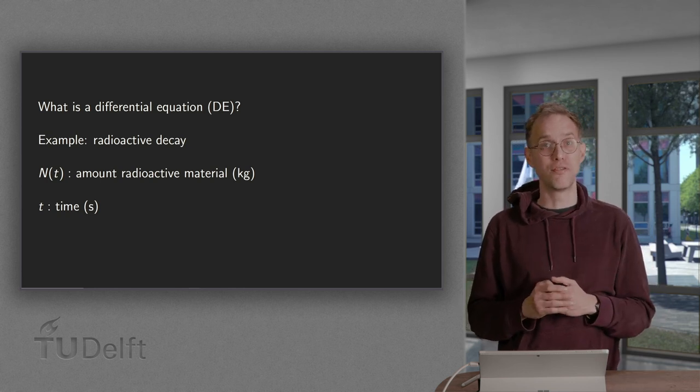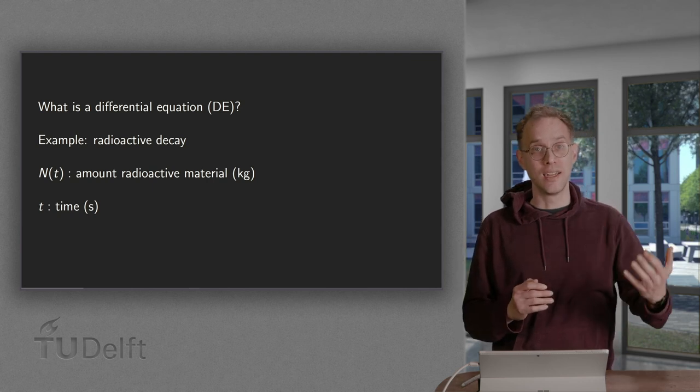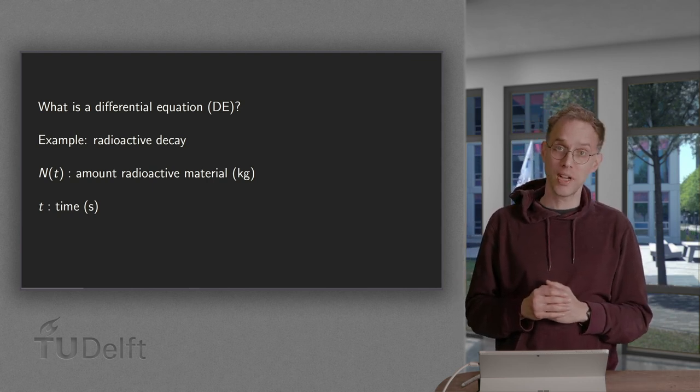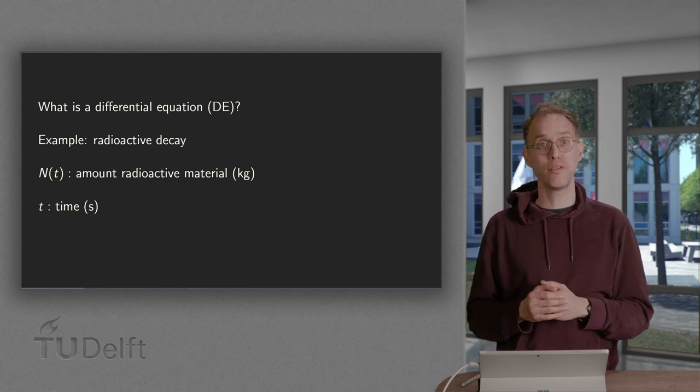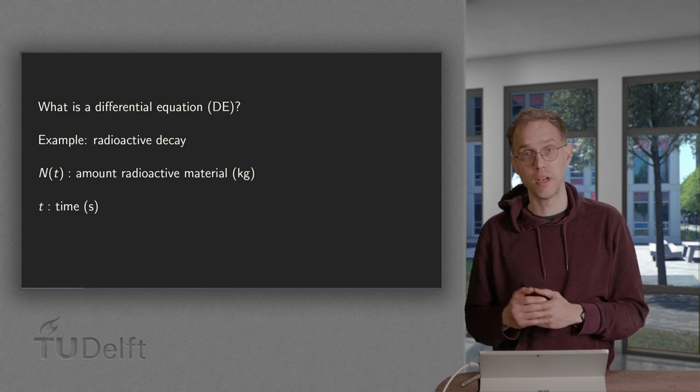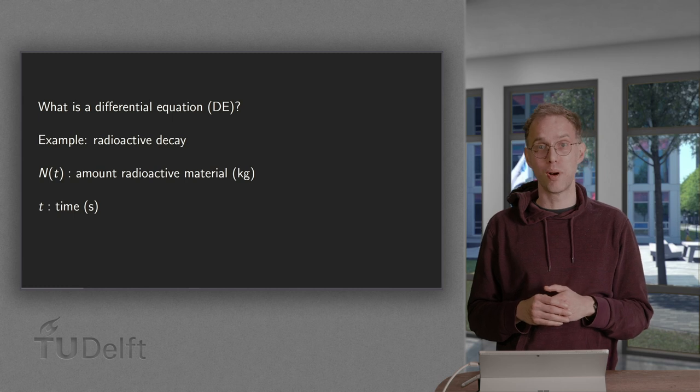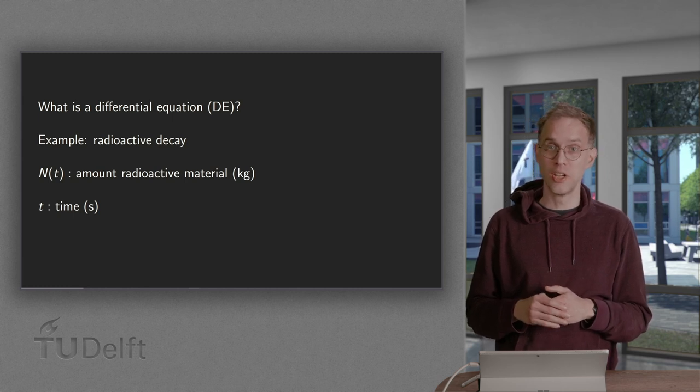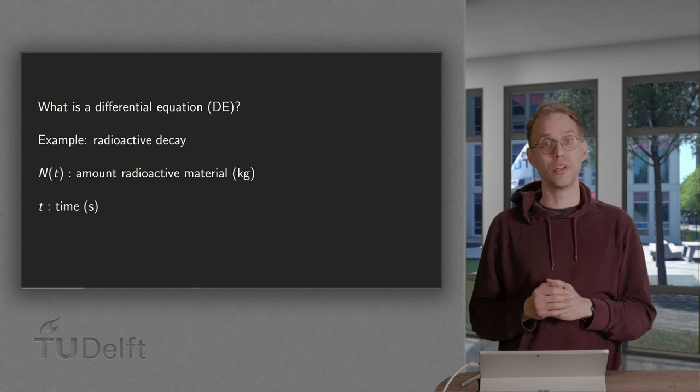In this case, the frictional force will depend on the velocity. The acceleration of the object, given by the total force divided by m, is the rate of change of the velocity and also depends on the velocity. There are many more problems in engineering like this, where the rate of change of a quantity depends on the quantity itself.